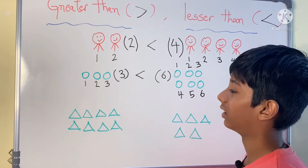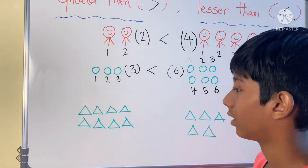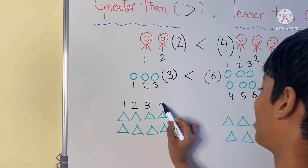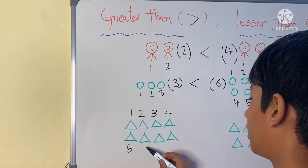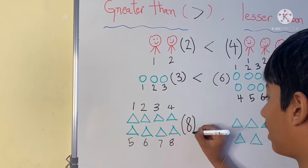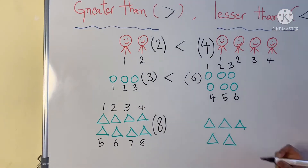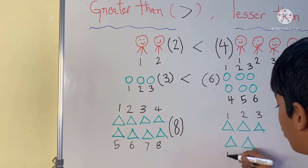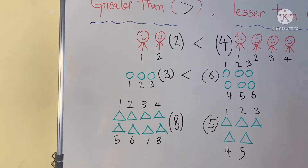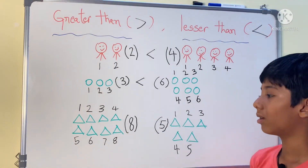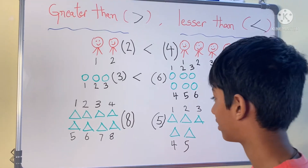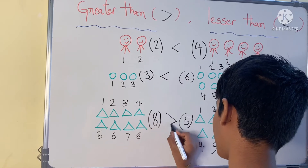Let us do the triangles. How many triangles are there? 1, 2, 3, 4, 5, 6, 7, 8 — there are 8 triangles. Now let us count this group: 1, 2, 3, 4, 5 — there are 5 triangles. Can you tell me the relation between 8 and 5? So 8 is greater than 5.